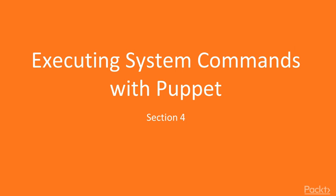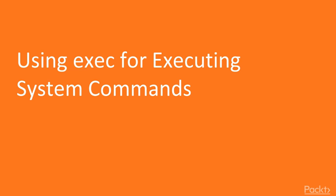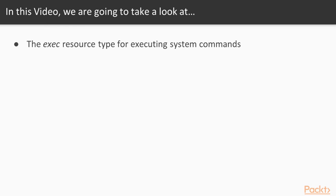In this section we learn how to execute arbitrary system commands with Puppet, and we are going to schedule cron jobs with Puppet. We are going to take a look at the exec resource type for executing system commands.